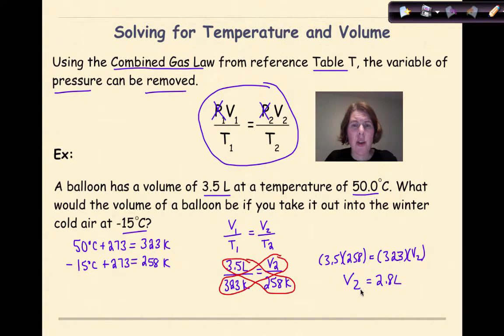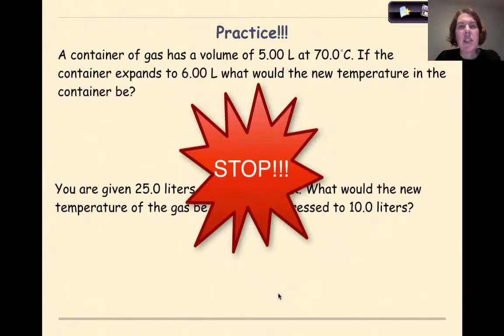Now let's again look at the relationship here. If my temperature is decreasing, like it is here, 323 Kelvin to 258 Kelvin, my volume should also be decreasing. So I have an original volume of 3.5 liters and an end volume of 2.8 liters. Therefore, my answer makes sense. Now what I want you to do is stop, see if you can attempt the next two practice problems, come back and check your work.